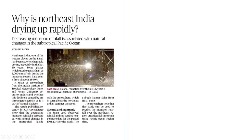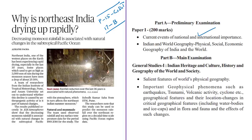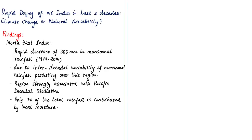The next article appears on page 15 in Chennai, Delhi and Thiruvananthapuram editions and page 17 of Bangalore edition. It is relevant in prelims under current events and geography, and in mains under GS Paper 1 in salient features of world's physical geography and important geophysical phenomena. The article is based on a research study titled 'Rapid Drying of Northeast India in the Last Three Decades: Climate Change or Natural Variability?' published in the Journal of Geophysical Research: Atmospheres, by researchers from the Indian Institute of Tropical Meteorology in Pune and Assam University. It observed a rapid decrease in rainfall received by Northeast India during the summer monsoon in the last 30 years.